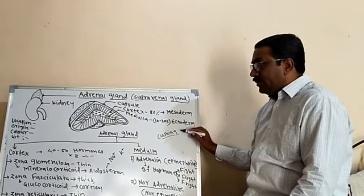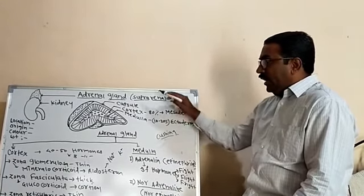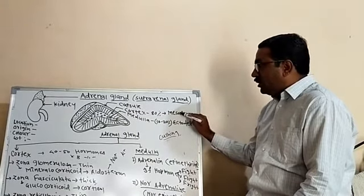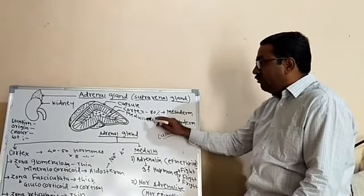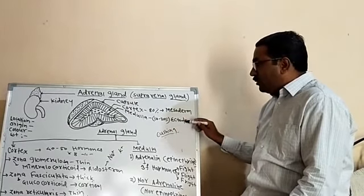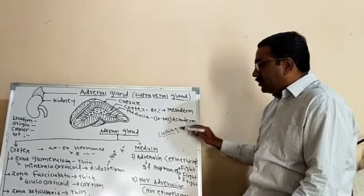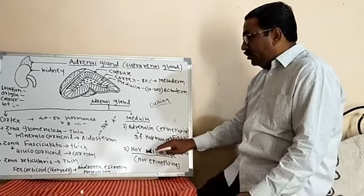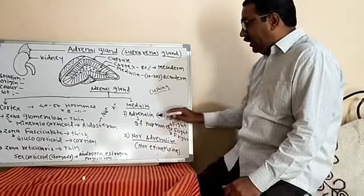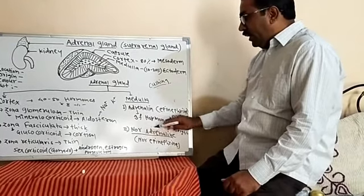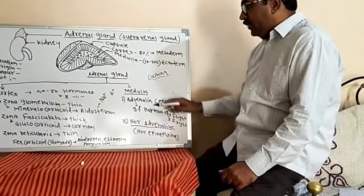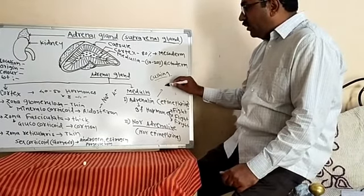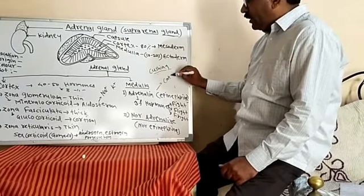The medulla of the adrenal gland secretes two hormones: adrenaline and noradrenaline. Both these hormones are called catecholamines.